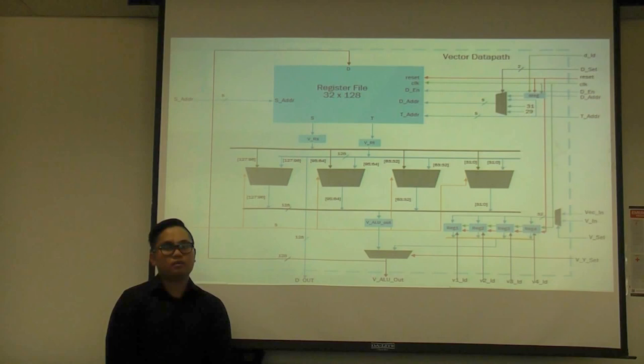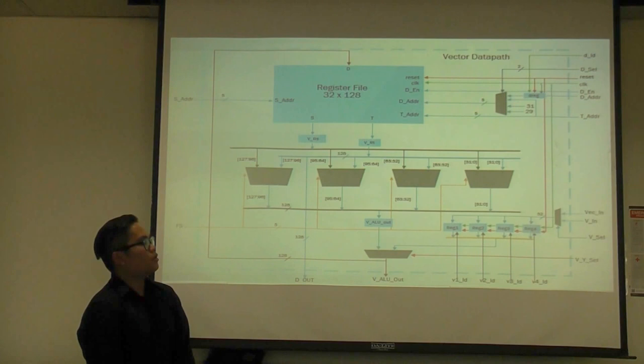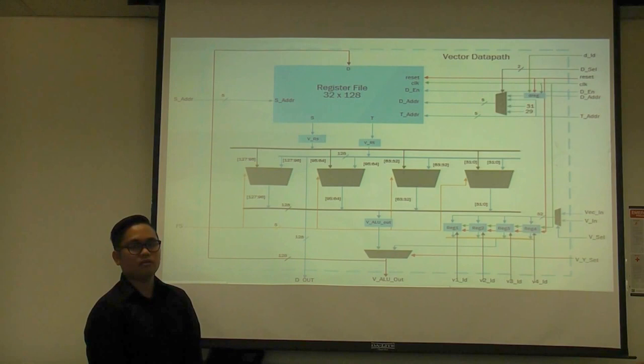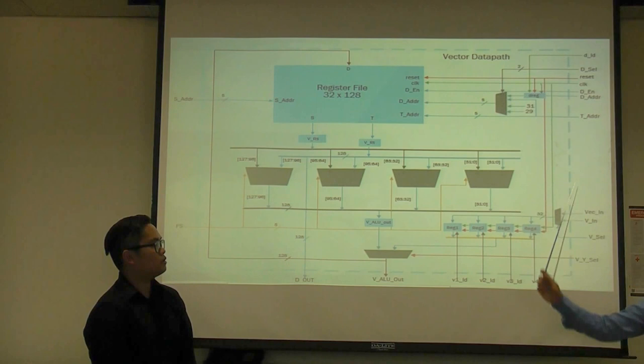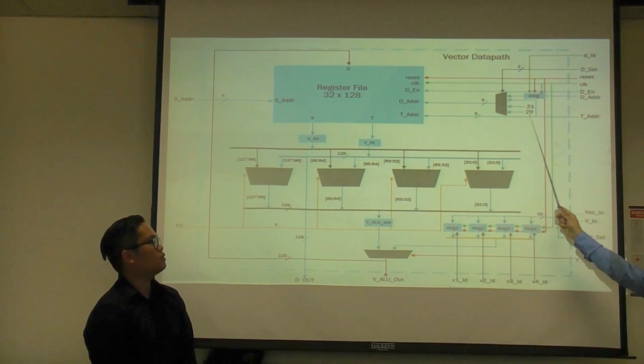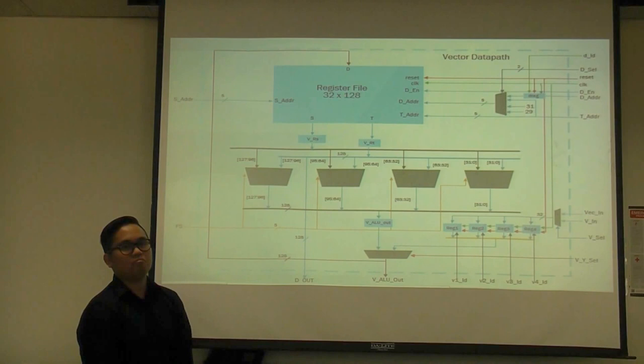Why did you need registers 31 and 29 of the vector register to be addressed? Those are because we still use a stack pointer — we used our integer data path and integrated parts of it into the vector data path. It is a separate unit but very similar. We could take out what's not applicable for the vector — only what is applicable for the vector should remain.